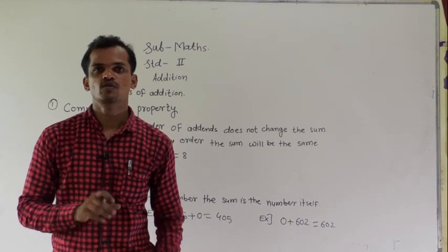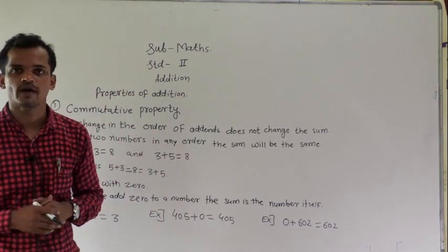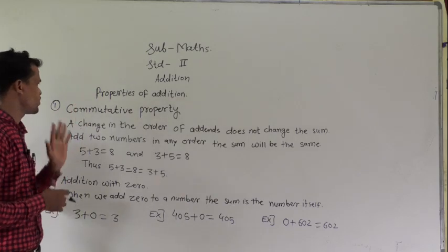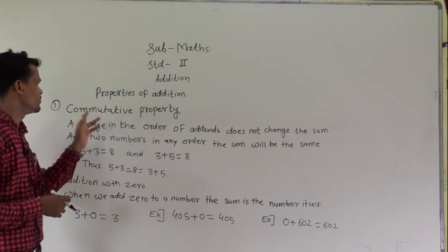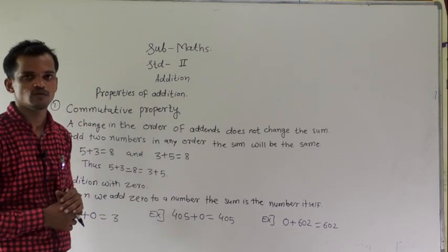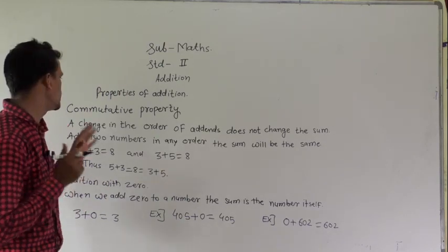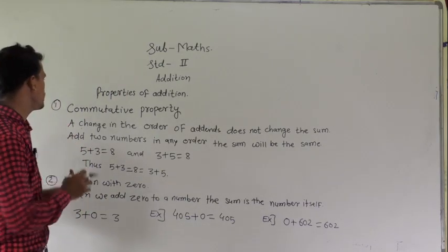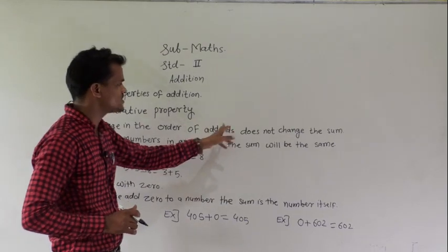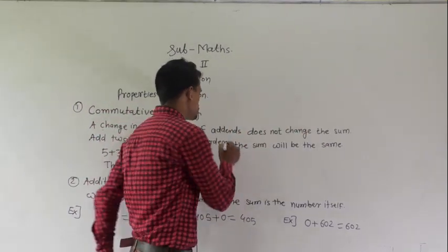Today we will see the properties of addition. The first property is the commutative property, and it states that a change in the order of addends does not change the sum.